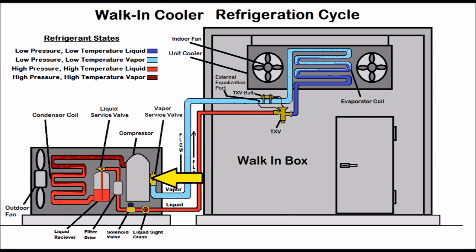You have low pressure, low temperature vapor heading into the compressor. The compressor is located in the outdoor unit, which is the condensing unit. Low pressure, low temperature vapor goes through the vapor service valve into the compressor — you should have vapor only heading into that compressor. Then you have high pressure, high temperature discharge vapor gas coming out. The compressor takes low pressure, compresses it, turns it into high pressure, and since it's high pressure it's therefore high temperature.